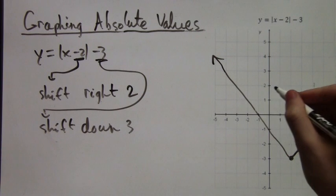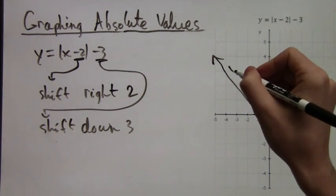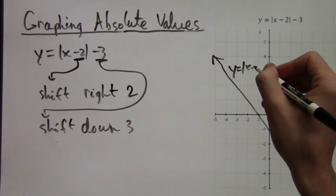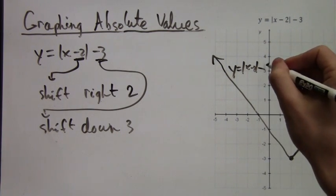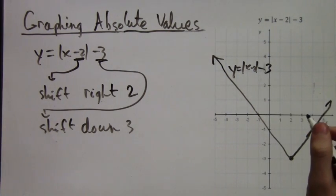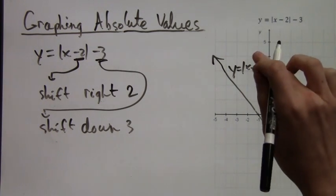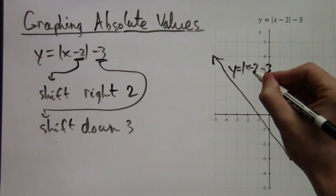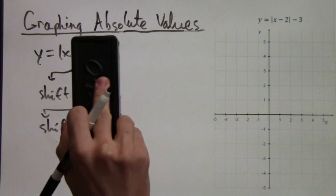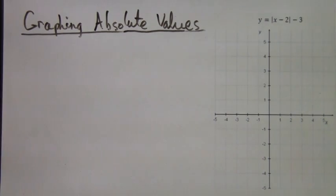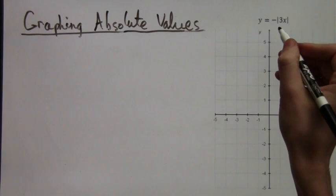So when graphing these absolute value functions, it's important to keep track of where that corner ends up after you shift. After that is done, then the rest is pretty easy. All right, now let's look at the next example.